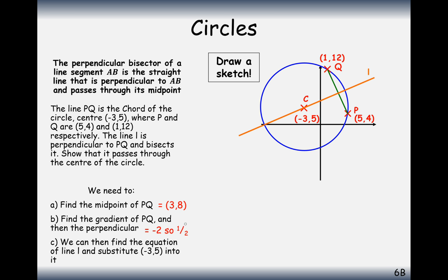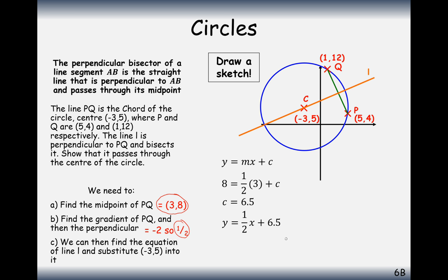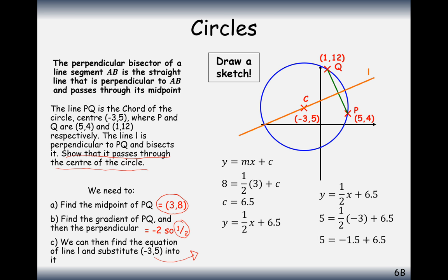Now we have the gradient of line L and a coordinate it passes through, so we just need to find the equation of this line. Substituting into y equals mx plus c, we get c is 6.5, so the equation of line L is y equals a half x plus 6.5. To answer the question — show that it passes through the centre — we plug in the x and y values of (minus 3, 5). Minus 1.5 plus 6.5 gives 5, which matches the y coordinate of the centre. Confirmed.